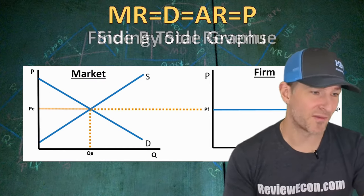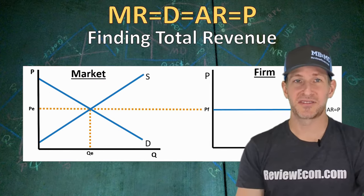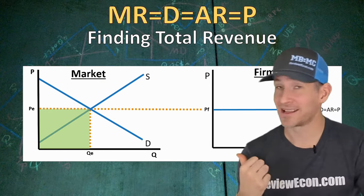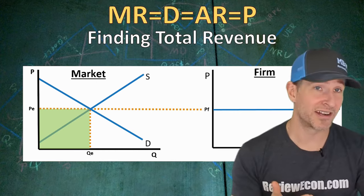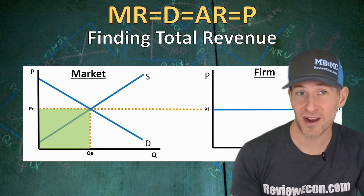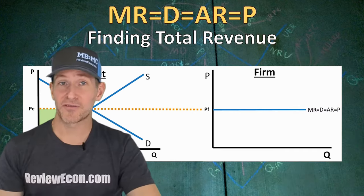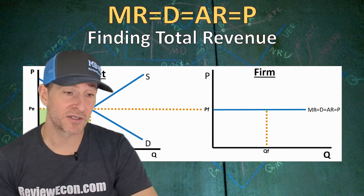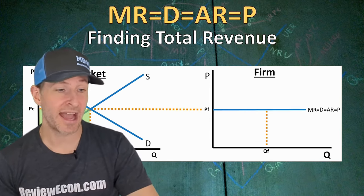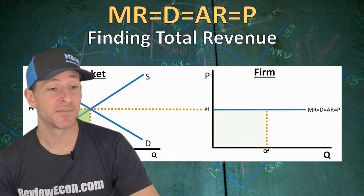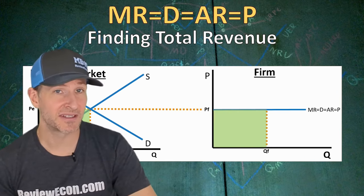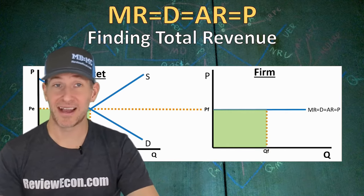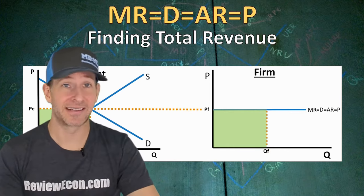When you graph this out for free response questions, you'll likely see side-by-side graphs — a market on one side with equilibrium quantity and price marked, and that equilibrium price carries over to the firm graph. Both graphs have P on the y-axis and Q on the x-axis. That equilibrium price from the market becomes the firm's price PF, giving us the MR = D = AR = P line. Total revenue in the market is quantity times price, and for the firm, at whatever quantity it produces, multiplying that quantity by its price gives the firm's total revenue as a rectangle on the graph.